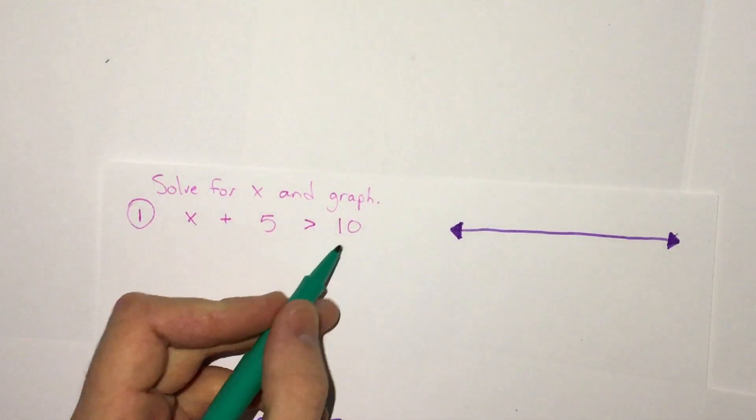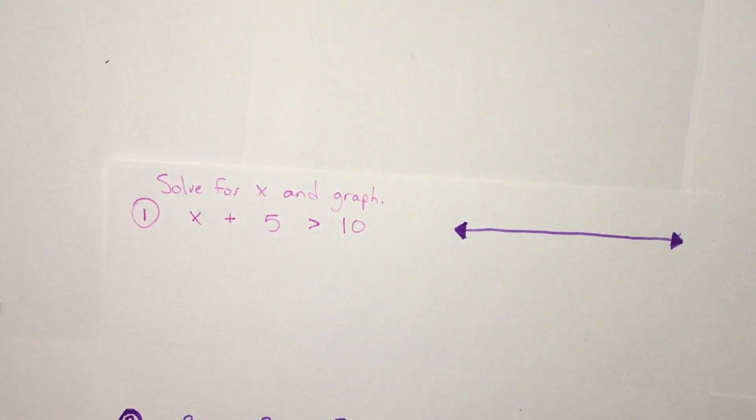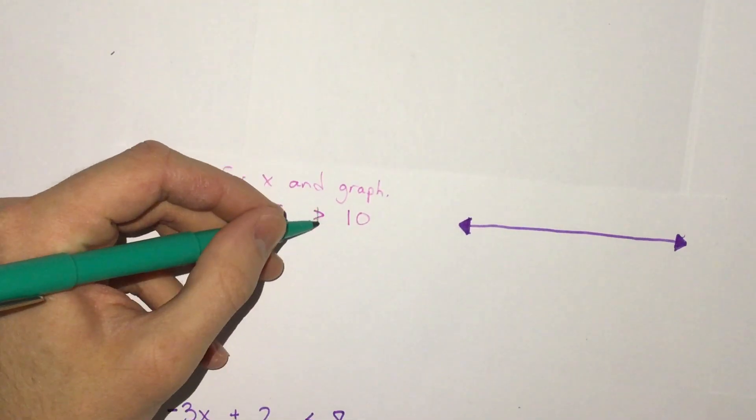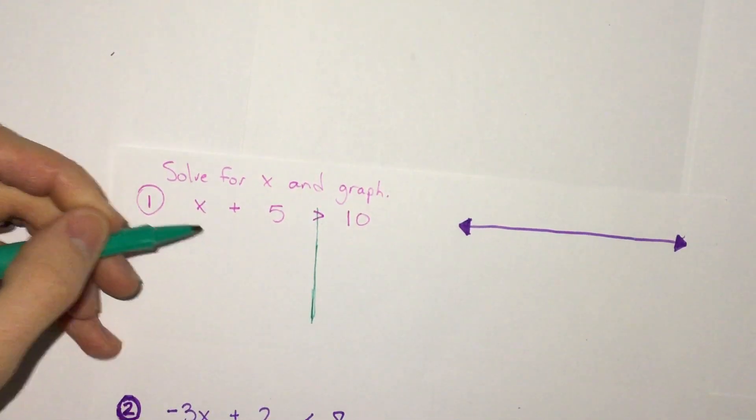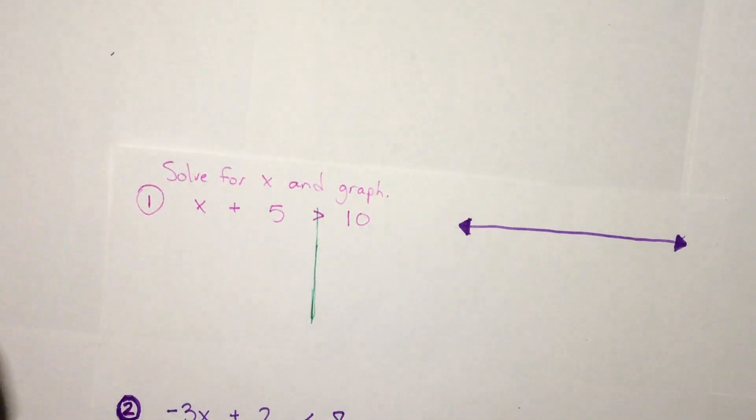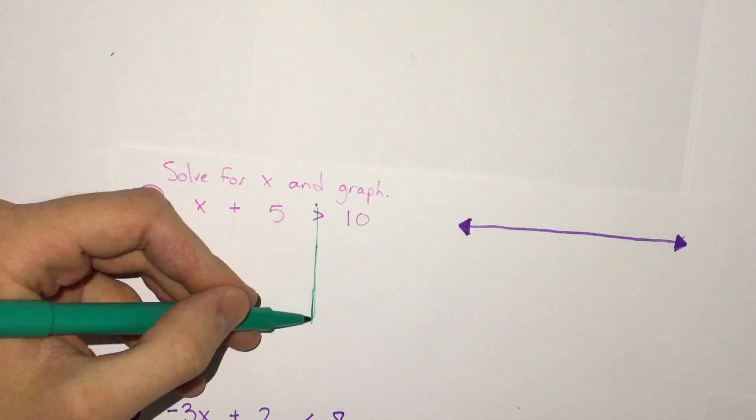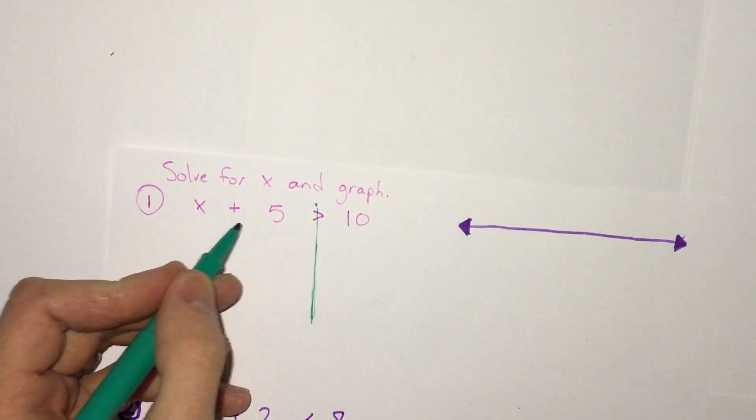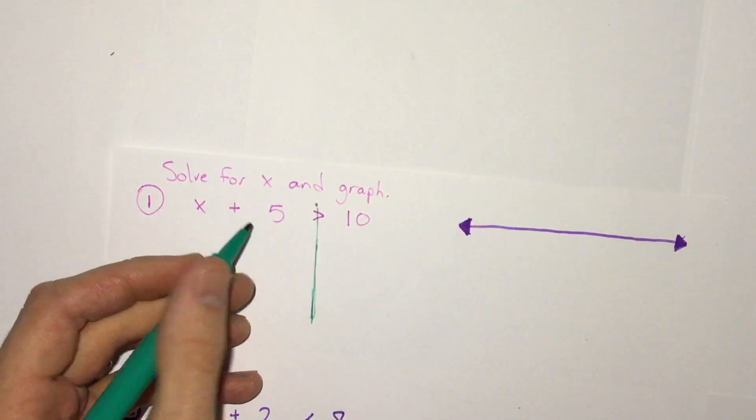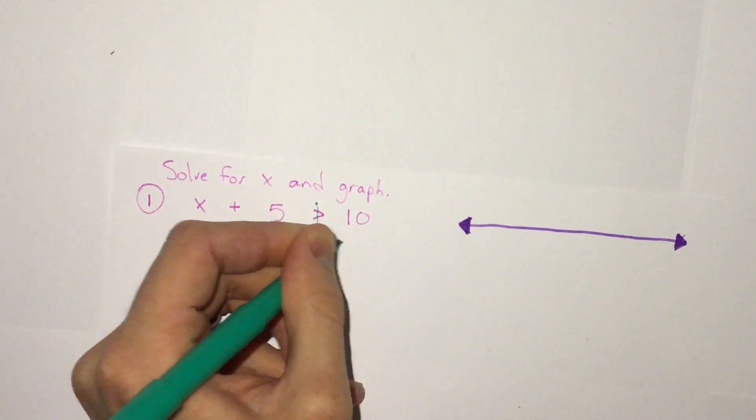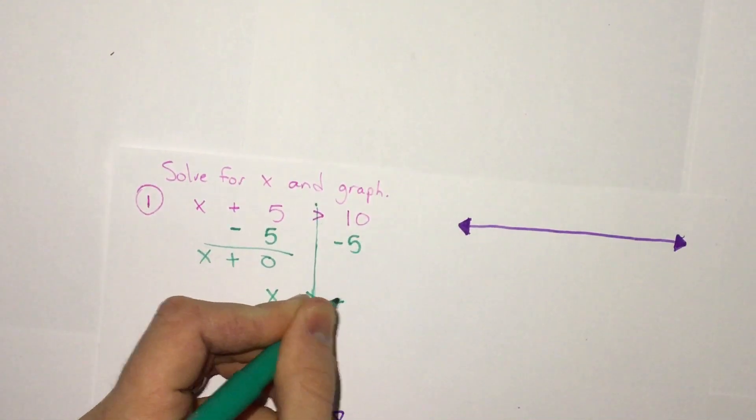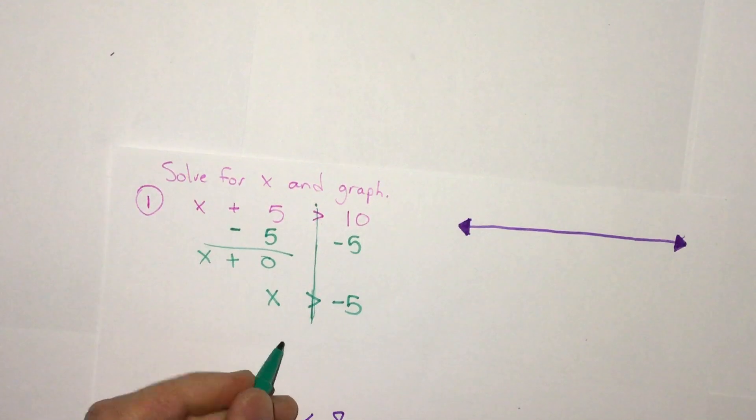Let's say we have x plus 5 is greater than 10. To solve an inequality is very similar to solving an equation. We want to get x by itself, do the opposite order of PEMDAS, and what we do to one side we do to the other. So x plus 5 is greater than 10. The only thing keeping x from being by itself is the plus 5, so we subtract 5 and that makes 0. x plus 0, so x is greater than negative 5. That's an inequality that we can graph. This is our answer that we've solved for, and then we want to graph it.